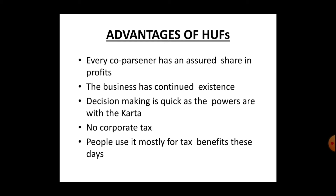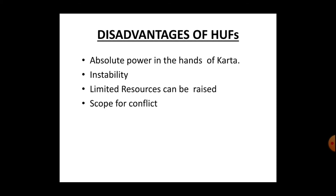Advantages of Hindu family business include: every co-partner has an assured share in profits; the business has continued existence as it transforms generation to generation; decision making is quick because power is handled only by the Kartha; no corporate taxes are imposed, and people use it mostly for tax benefits. Disadvantages include: absolute power is only in the hands of the Kartha, who can take every type of operational and financial decision; instability if male generation is not available; limited resources can be raised; and scope for conflict arises because it involves a family.